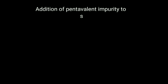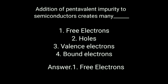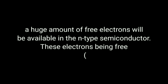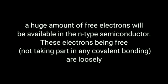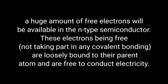Next question: Addition of pentavalent impurity to a semiconductor creates many blank. Option 1: Free electrons. Option 2: Holes. Option 3: Valence electrons. Option 4: Bound electrons. Answer is free electrons. A large number of free electrons are available in the N-type semiconductor because it is pentavalent in nature. Electrons not taking part in covalent bonding are loosely bound to their parent atom and are free to conduct electricity, so it is called N-type semiconductor.